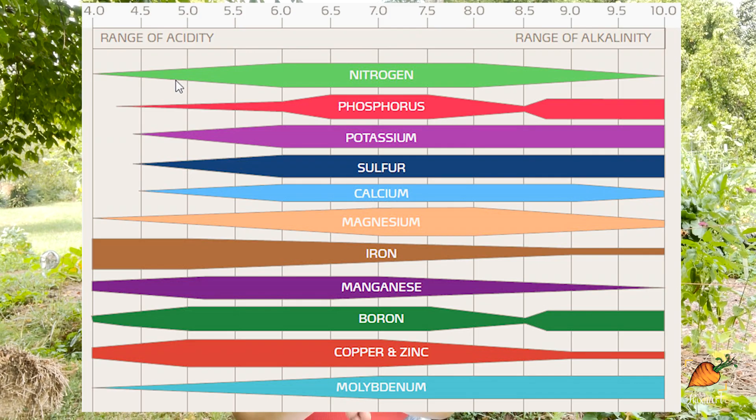This is not going to test for actual nutrients in the soil, but it is going to test for pH, which can help you figure out which nutrients are available to your plants. Most plants grow best in a soil pH that is neutral around 7, or ever so slightly acidic at about 6.5, because this is the sweet spot where most of the essential nutrients for plants are available in the soil. There's a really great chart that shows the tapering of different nutrients as the soil gets either more acidic or more basic.